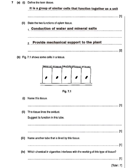As for B, it is saying figure 7.1 shows some cells in a tissue. The first question is: name this tissue. This tissue is called ciliated tissue. What enables me to identify it as ciliated tissue is because of the presence of the cilia.